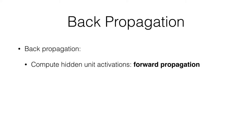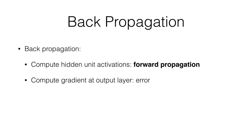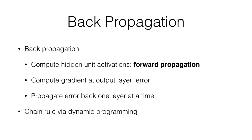Backpropagation works like this. You first compute the hidden unit activations through forward propagation, which is the procedure for predicting something with a neural network. Then you compute the gradient at the output layer — often referred to as the error — and propagate that error back one layer at a time. This propagation is essentially computing the chain rule, which you can view as a recursive definition for the derivative of a nested function.